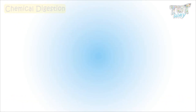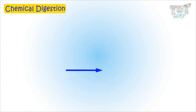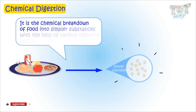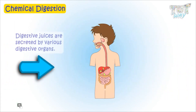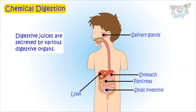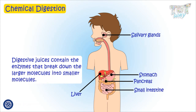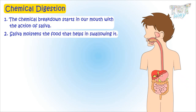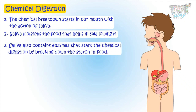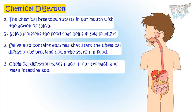Now let's learn about chemical digestion. Chemical digestion is the chemical breakdown of food into simpler substances with the help of various digestive juices. Digestive juices are secreted by various digestive organs and contain enzymes that break down larger molecules into simpler, smaller molecules. The chemical breakdown starts in our mouth with the action of saliva. Saliva moistens the food to help in swallowing and contains enzymes that start chemical digestion by breaking down starch. Chemical digestion also takes place in the stomach and small intestine.